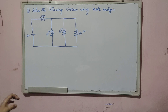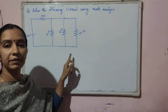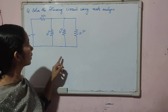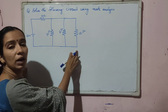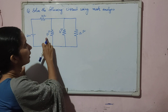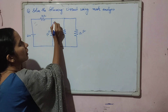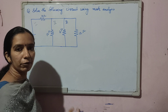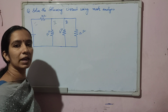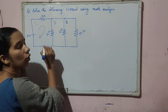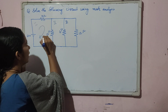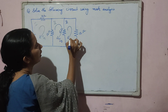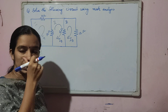Let us solve one more problem using mesh analysis. We have been given a circuit and asked to solve it using mesh analysis. First, we need to identify the meshes — there are three meshes: mesh number one, mesh number two, and mesh number three. After identifying the meshes, we mark currents to all the meshes in the clockwise direction: I1, I2, and I3.